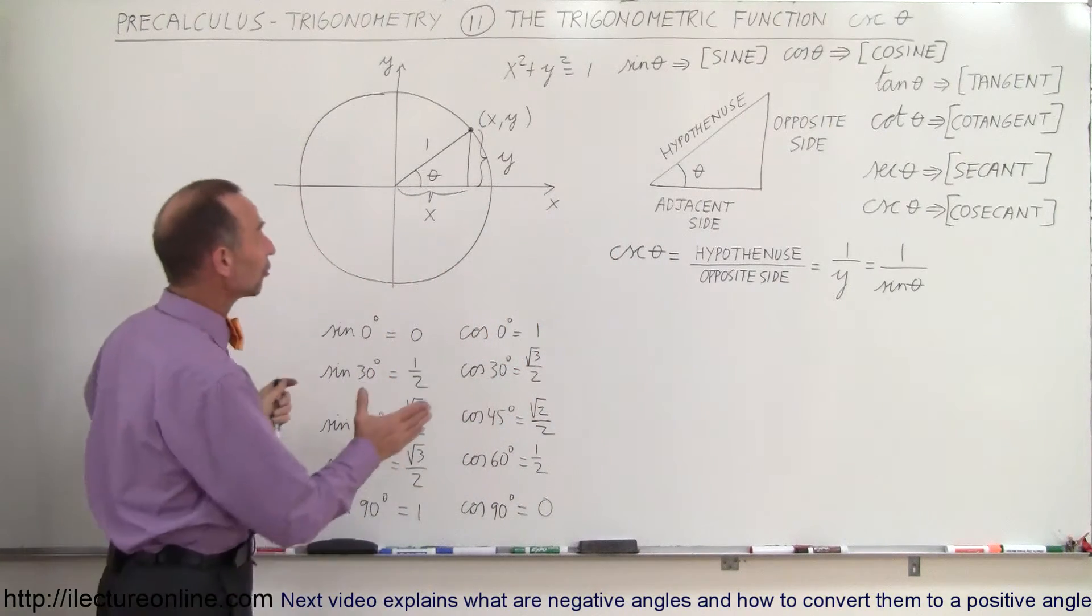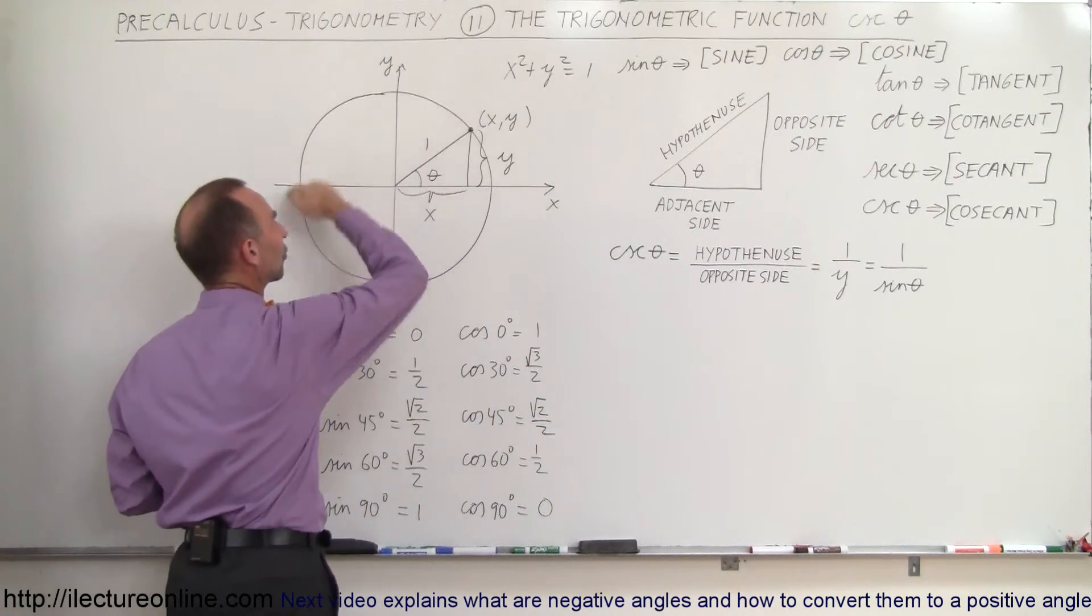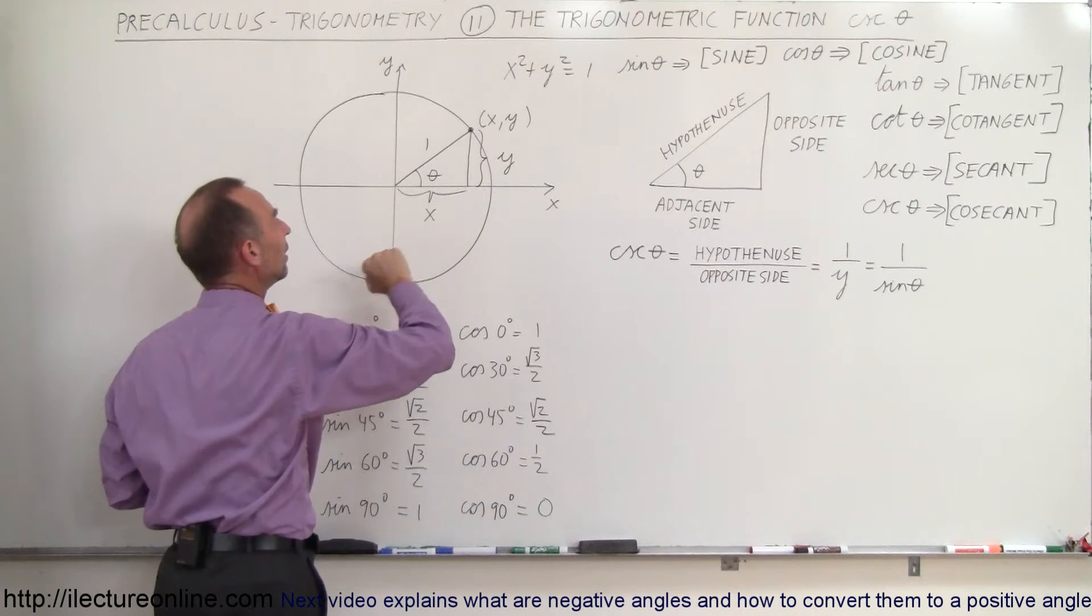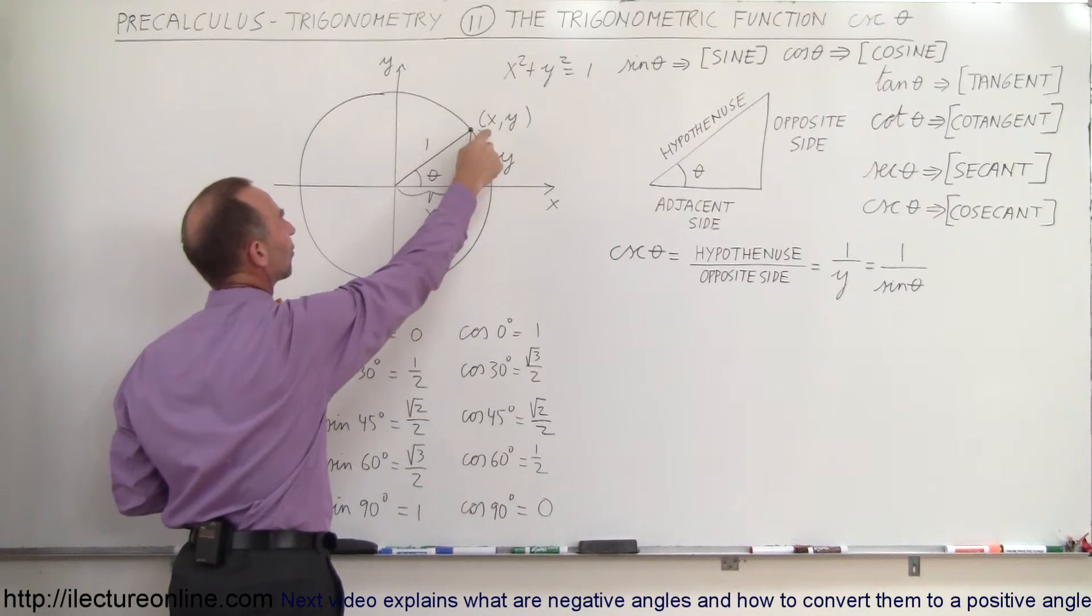Well, again going to the unit circle, we have the angle theta. We have the unit circle which has a radius equal to one, and any point along the unit circle has a coordinate (x,y).